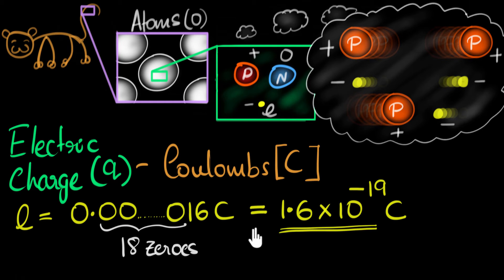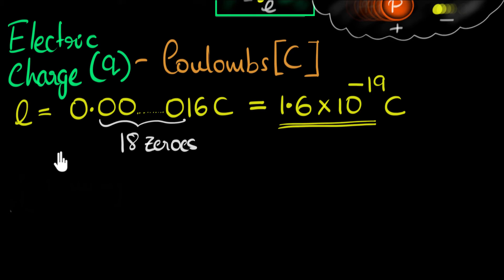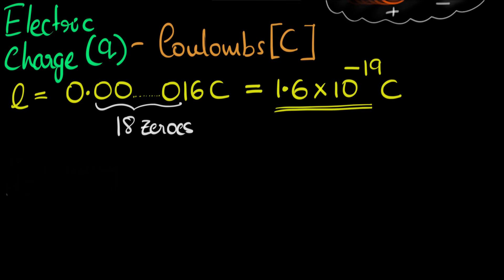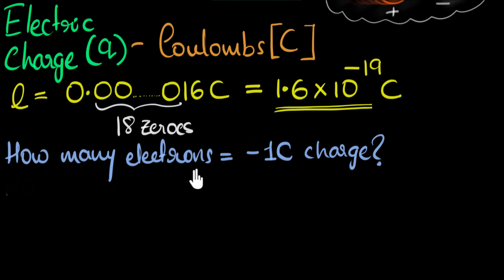You get it? So it's going to be a huge number because the charge on each electron is so tiny. We need a lot of electrons to make up one coulomb, but exactly how much is the question? So let's think about this. Let's go down a little bit. And so here's the question, how many electrons together make up a negative one coulomb worth of charge?